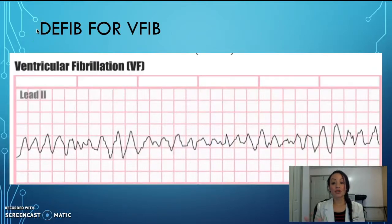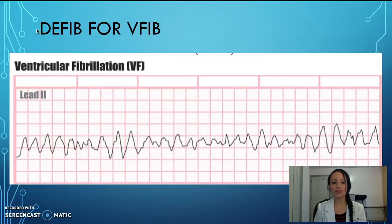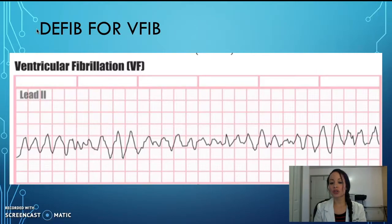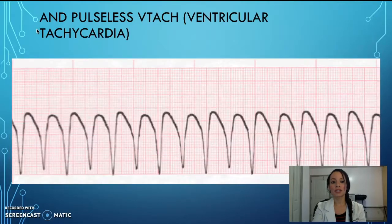Ventricular fibrillation — as you can see, it's an irregular rhythm. There's obviously no P-wave because it's a ventricular rhythm, very irregular. These individuals are not going to have a pulse, so that's why we are defibrillating them.